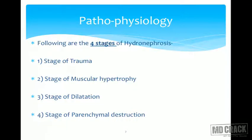The pathophysiology continues through the three stages: hydrocalycosis and hydronephrosis. There are also four stages of pathology observed. First is the stage of trauma or insult. Second, it progresses to the stage of muscular hypertrophy. If this continues, it leads to a stage of dilatation. If dilatation continues further, it leads to destruction of the parenchyma and eventually to hydronephrosis.